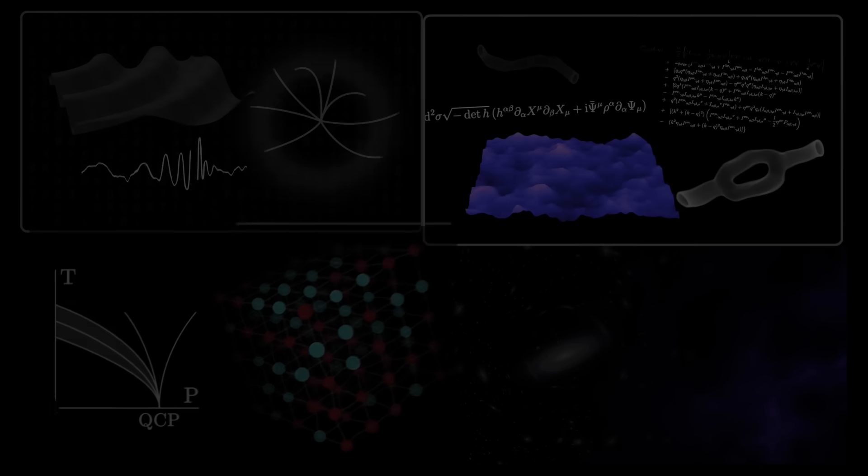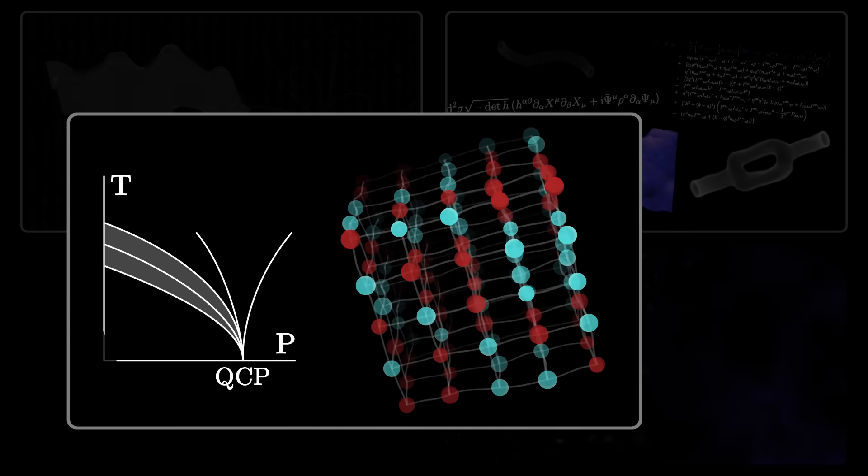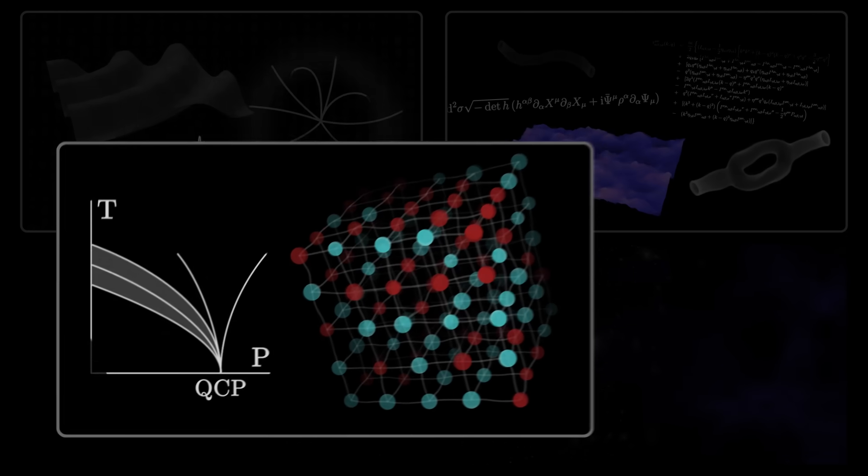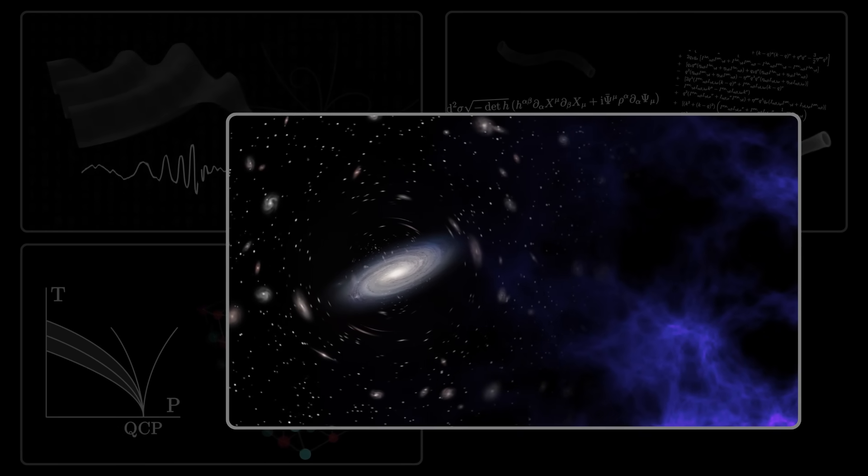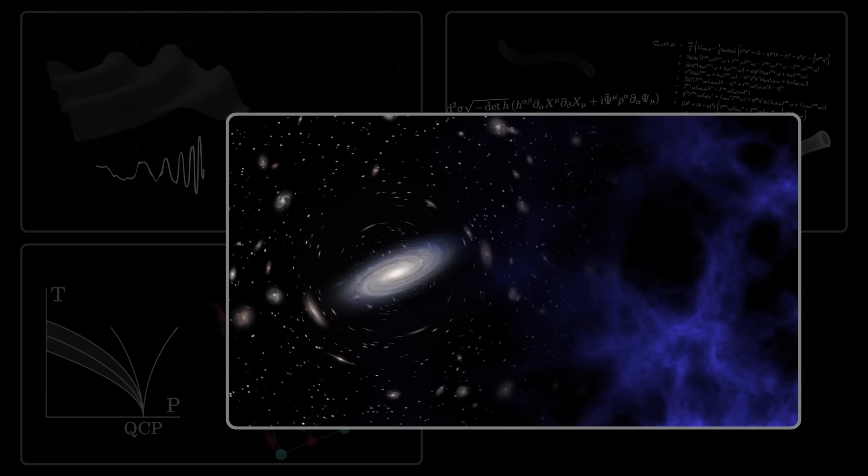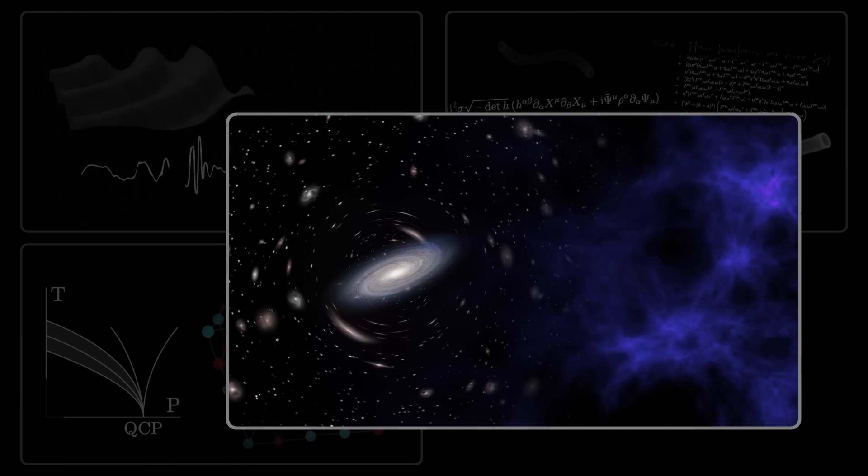But also in condensed matter physics, to discover new properties of materials or simulate phase transitions. And finally in astrophysics, in order to trace the formation of certain structures, reconstruct images distorted by gravitational lensing, or even map the presence of dark matter in galaxies.